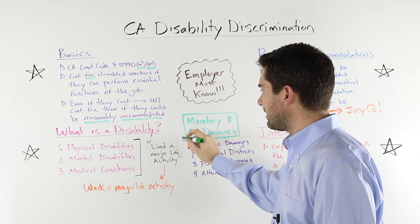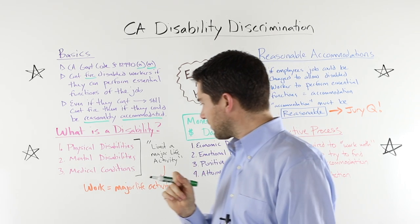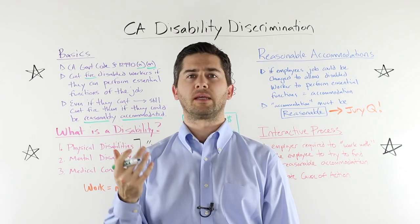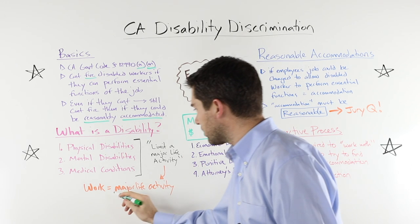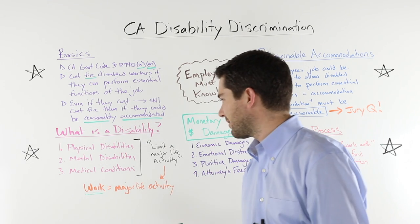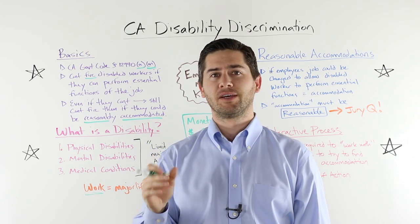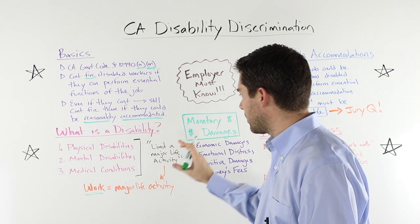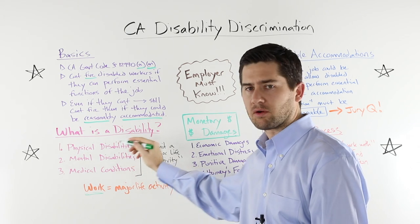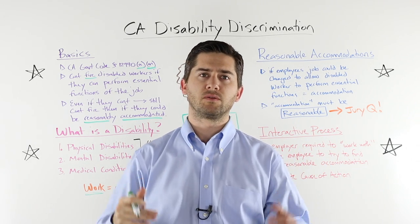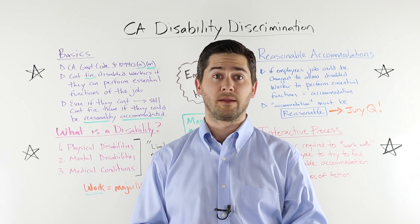Any one of these must limit a major life activity. What does that mean? California case law has defined a major life activity to include work. Obviously, working is a big part of anybody's life, so that's not too difficult to establish. What is sometimes more in controversy is whether or not your medical condition actually constitutes a disability under one of those three definitions.